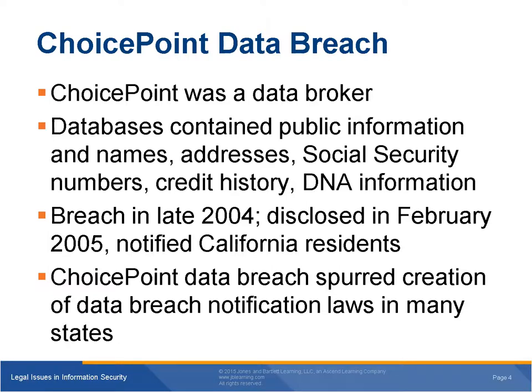ChoicePoint sold these profiles to government and private companies. People used the profiles to conduct background checks. ChoicePoint also sold profiles to insurance companies that collected many different types of personal information. It had names, addresses, and social security numbers. Its databases also included credit history and DNA information.